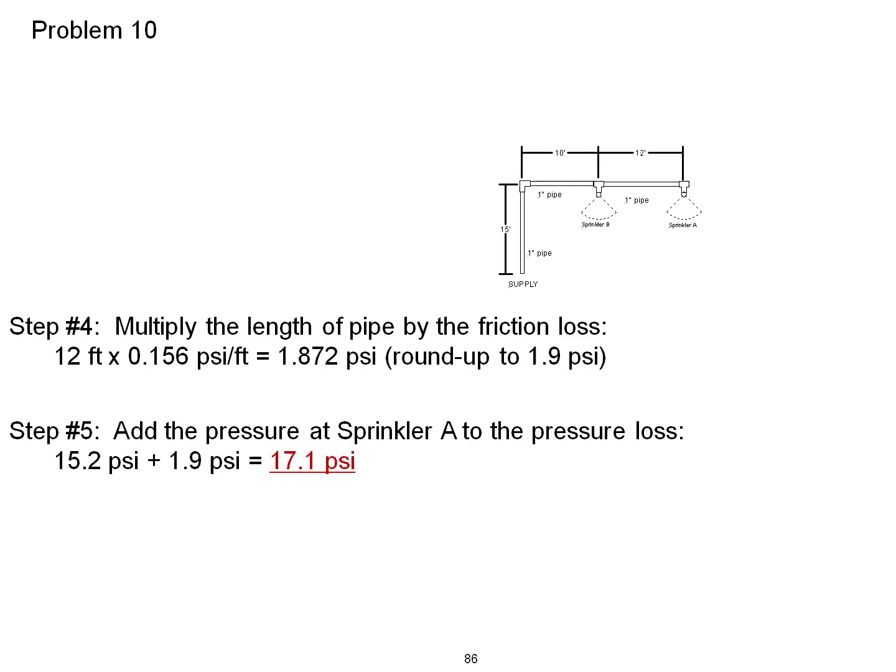Step 4, multiply the length of the pipe by the friction loss. 12 feet times 0.156 PSI per foot is equal to 1.872 PSI. Let's round it up to 1.9 PSI. Step 5, add the pressure at sprinkler A to the pressure loss: 15.2 PSI plus 1.9 PSI gives us 17.1 PSI.